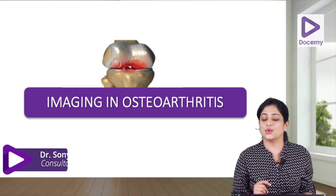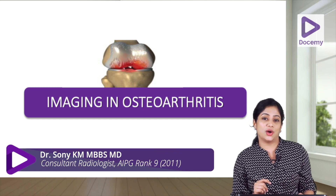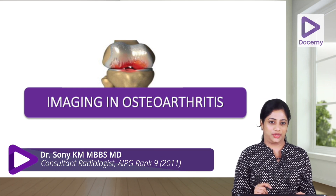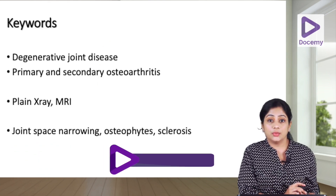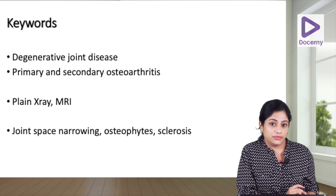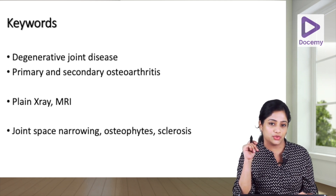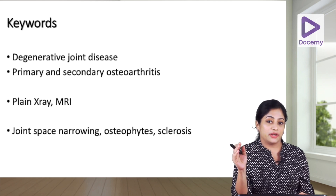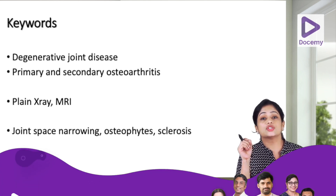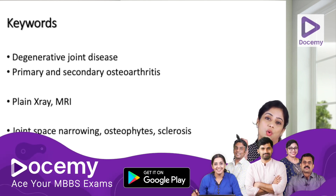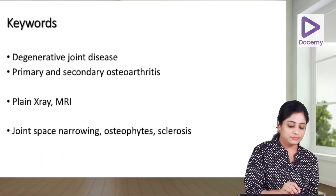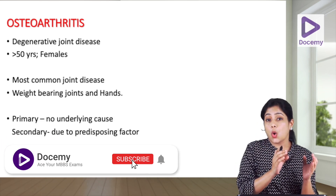Hi friends, which is the most common arthritis that affects joints? Yes, it is osteoarthritis. Today we will discuss imaging in osteoarthritis. The keywords we will discuss are osteoarthritis, degenerative joint disease, primary and secondary osteoarthritis, X-ray and MRI findings of osteoarthritis, joint space narrowing, sclerosis, and osteophytes.